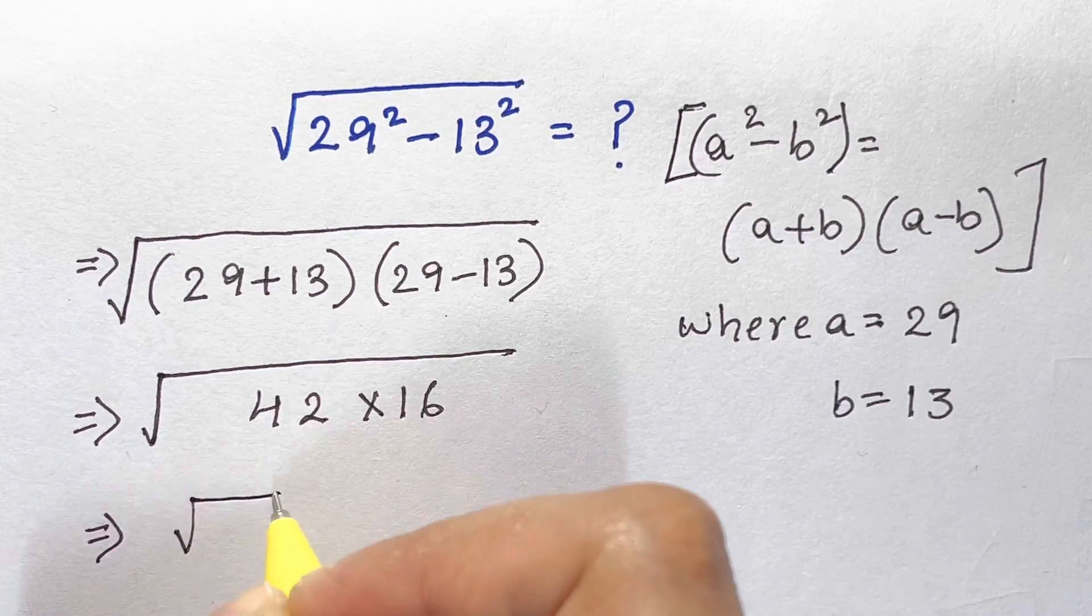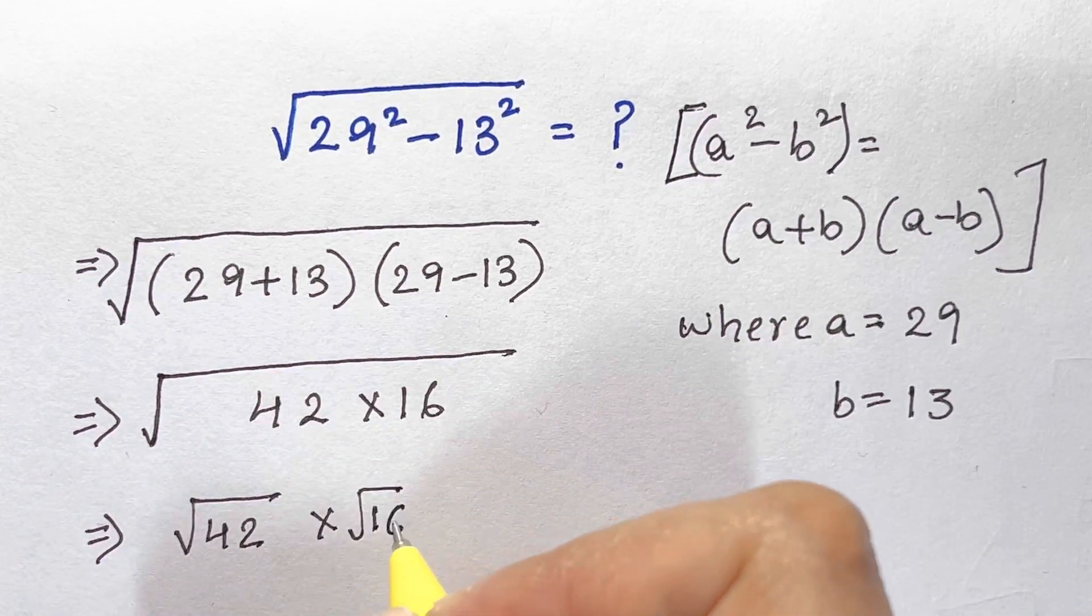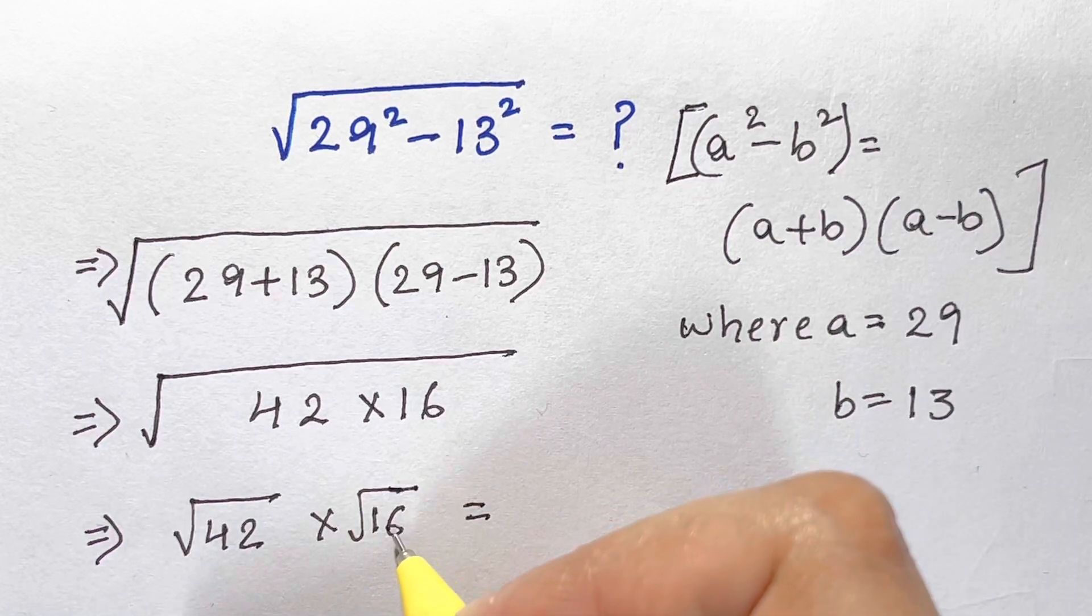Now we can split this under root of 42 times under root of 16. Under root of 16 is 4 as we know.